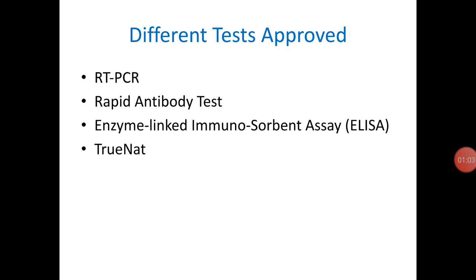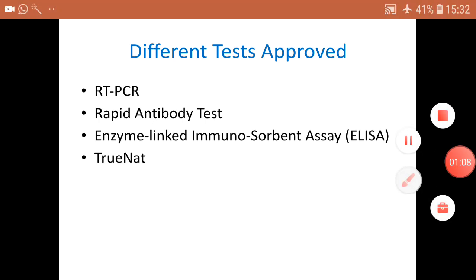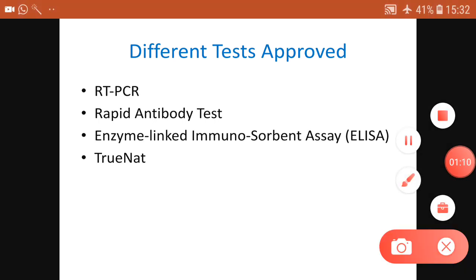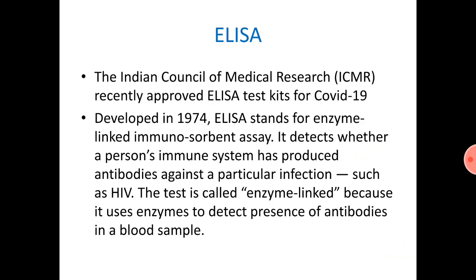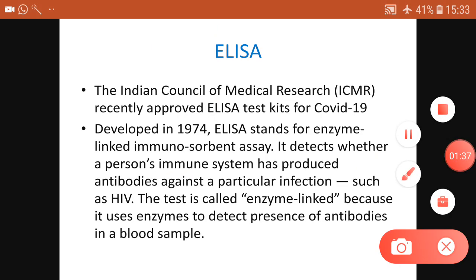What are the different tests approved by ICMR? One is RT-PCR, which most of you must have already heard about. Then there is the rapid antibody test, also called the rapid test. Then enzyme-linked immunosorbent assay, ELISA, which was approved very recently by ICMR. And then TrueNAT. So there are four different types of tests. Let us go into each one.